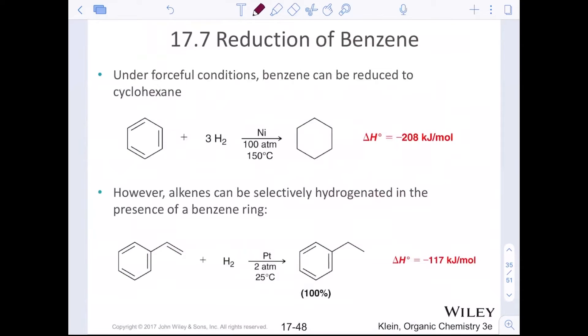Under forceful conditions, we can take benzene and reduce it to cyclohexane. It takes a very good catalyst, such as nickel, 100 atm and 150 degrees Celsius. Yes, that does look like a bomb to me as well. Really forceful conditions, really crazy conditions.